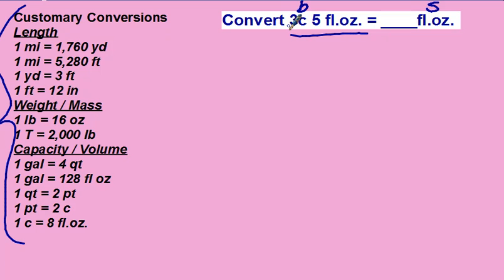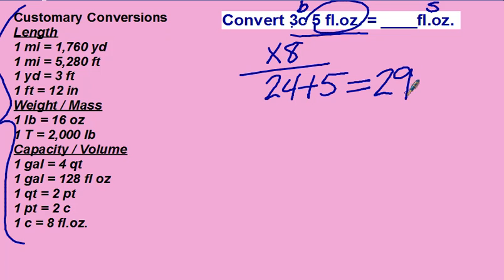So big to small, we're going to multiply. 3 times 8, there's 8 fluid ounces in a cup, 3 times 8 is 24, and then don't forget to add back in your extra 5 fluid ounces right here. That's what most people forget, equals 29, so 29 fluid ounces.